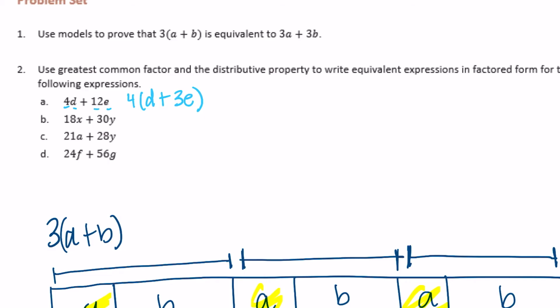Next one, 18x plus 30y. We need to find a common factor of 18 and 30. I think their greatest common factor would be 6. So I'm going to factor out 6. 18 divided by 6 is 3x plus 30 divided by 6 would be 5y. So 6 times 3x plus 5y.